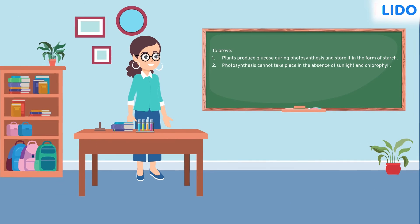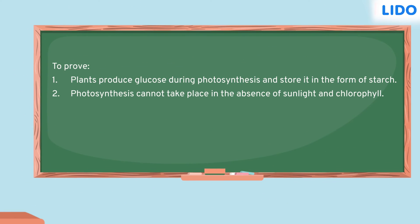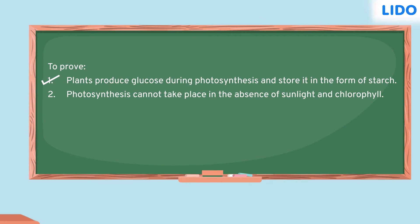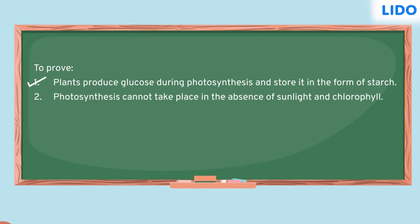This colour change shows that the leaf contains starch. So, Sapna concluded that plants produce glucose during photosynthesis and store it as starch.